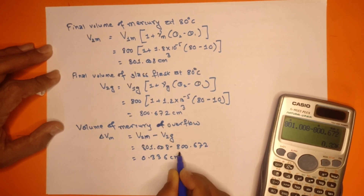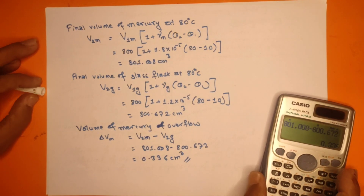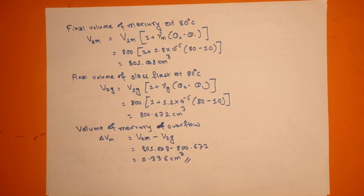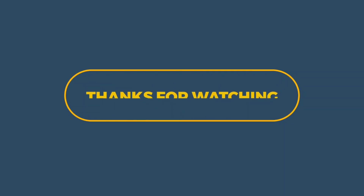What was the volume of overflow from the glass? It is 0.336 cm³. Thank you for watching this video. Please like and share, and subscribe to the channel for new videos. Thank you.